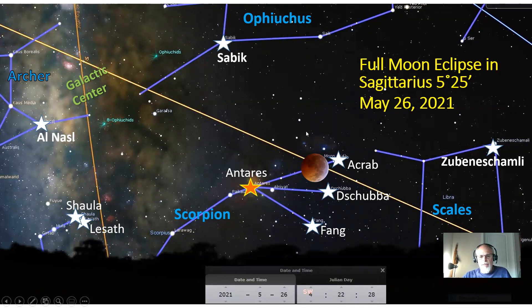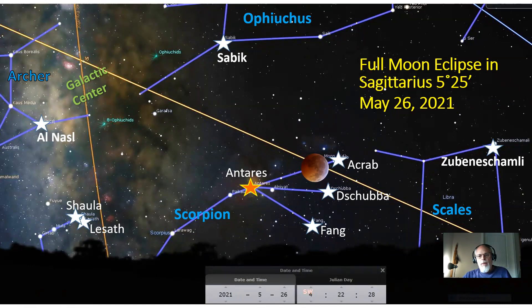Where does this lunar eclipse take place in the Scorpion constellation? Right there by one of the claws of the scorpion and near the heart. The scorpion is the guardian of the galactic center, where great mystery has a powerful symbology of where souls go mythologically to go through death and rebirth into a new life, perhaps in a new galaxy or another planet. This is a connection into the way the celestial world meets the underworld.